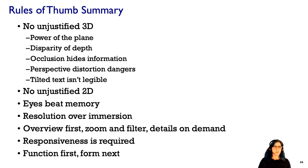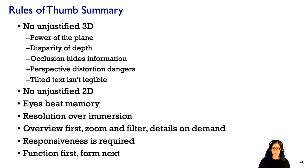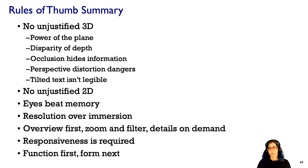To summarize the rules of thumb: always justify 3D — and even justify 2D. Eyes beat memory. Think carefully about whether you need immersion, especially when there's a trade-off with resolution. Schneiderman's mantra — overview first, zoom and filter, details on demand — is a great guide for visualization design. Think about what kind of responsiveness the system should have when responding to user actions. And both function and form are important, but start with function, then add form.